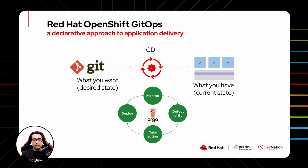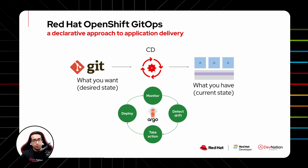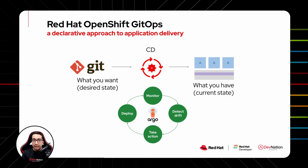In Kubernetes, GitOps-based continuous delivery for applications could be implemented using Argo CD, which is an open-source project backed by CNCF. Argo CD automatically syncs configurations from Git repositories and applies them to Kubernetes clusters, and closely monitors the deployed application resources.